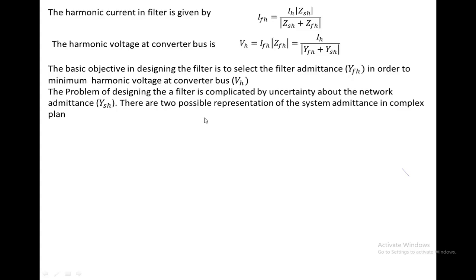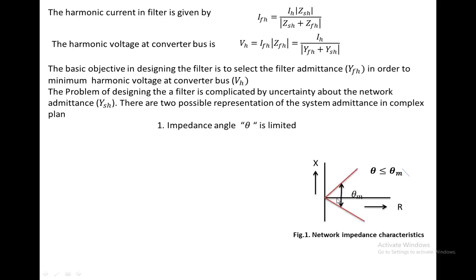There are two possible representations of system admittance in complex form. In the first method, the impedance angle theta is limited. On the x-axis we have resistance and on the y-axis we have reactance. Theta_M is the maximum impedance angle of the system admittance, representing the angle between the two impedance boundary lines. We select the system admittance such that it is less than the maximum admittance angle of the system.